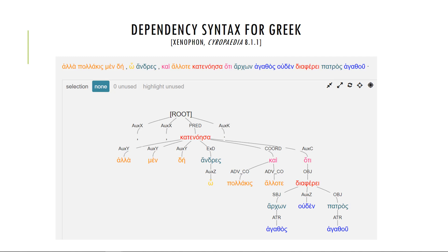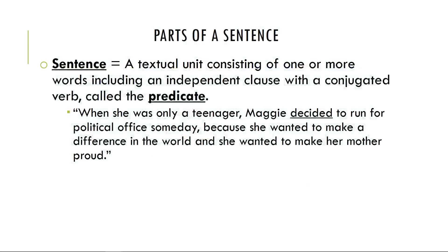So let's begin at the beginning. I want to go through the language of syntax, starting with parts of a sentence. The sentence itself is the textual unit that is independent — that's the one required part. In Greek, the only thing you need really is a verb, because the verb will contain the subject as well, and we call the main verb of the sentence a predicate. For example: 'Maggie decided to run for political office someday' is your main clause, your independent clause — 'decided' is your main verb.